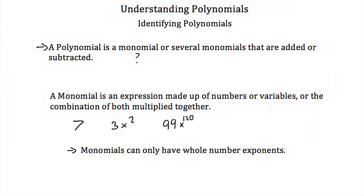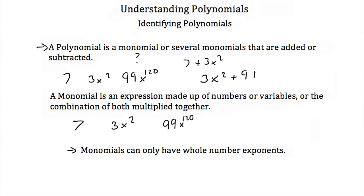If a polynomial is a monomial or several monomials that are added or subtracted, then 7 and 3x squared and 99x to the 120 are all polynomials. And if I started adding or subtracting these — like 7 plus 3x squared — that would be a polynomial as well. Or 3x squared plus 99x to the 120, that would be a polynomial as well.